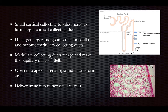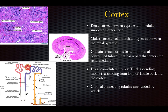The urine travels from the cortex into the medulla and back to the cortex, and finally into the medulla within the collecting ducts. The cortex is smooth on the outer zone, forming cortical pyramids or cortical columns that project between the pyramids. These contain the renal corpuscles and proximal convoluted tubules, with parts entering the renal medulla.